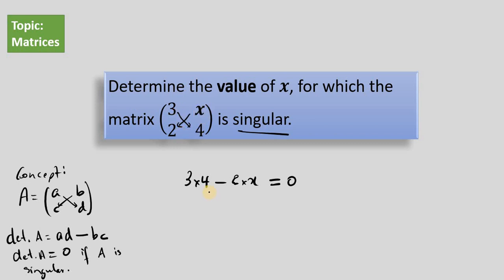When we work out the determinant, that is. So 3 times 4, that's 12. 2 times x, that's 2x, which is equal to 0.